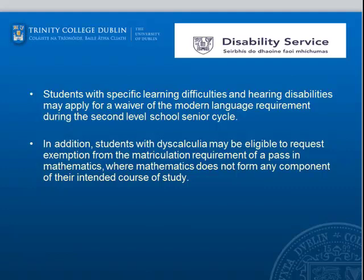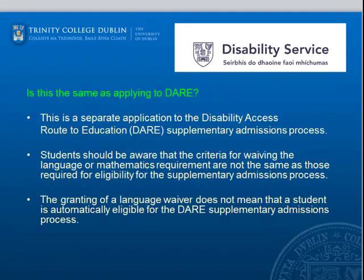In addition, students with Dyscalculia may be eligible to request exemption from the matriculation requirement of a class in Maths, where Maths does not form any component of their course of study. This is a separate application to the Disability Access Route to Education, also known as DARE.